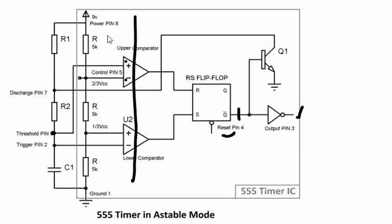There are three sections basically, and apart from this there is an input section where you do the trigger. Now, why do we call it a 555 timer? Because it has 5K resistors which are used three times — here, here, and here. That is why it is basically called a 555. This is internal to the 555 timer, so the user does not have access to it.